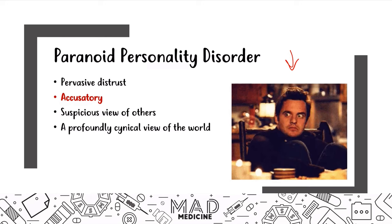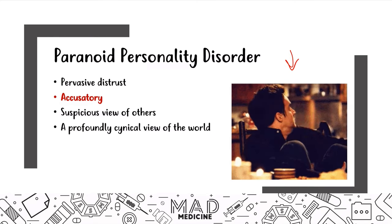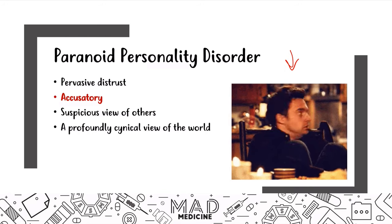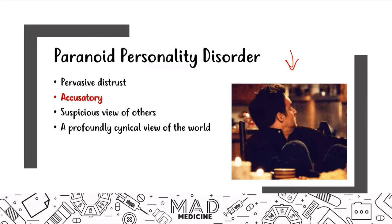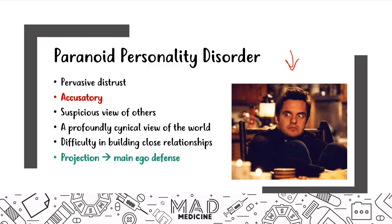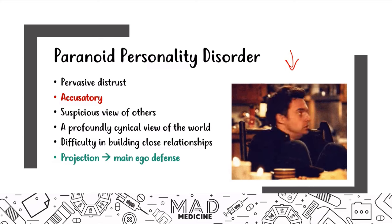A lot of these patients may have conspiracy theories they believe in no matter what. Because of all this, it's difficult for them to have interpersonal relationships — not just because they don't want them, but because they don't trust people and have a suspicious view of others. When they accuse someone, that person no longer wants to be close to them. Their main ego defense is projection — they project their insecurities onto someone else.